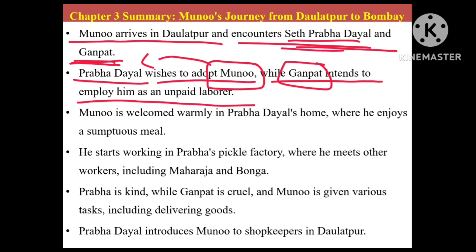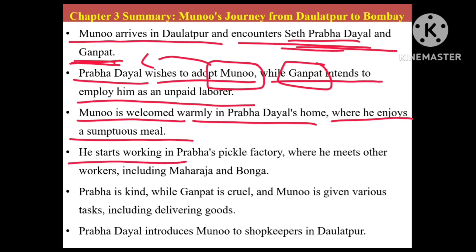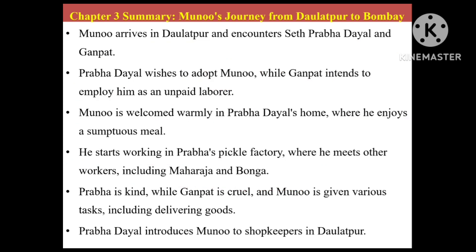Munnu is welcomed warmly in Prabhadayal's home where he enjoys a sumptuous meal — this was the need of the hour, as Munnu had escaped without money. He starts working in Prabhadayal's pickle factory where he meets other workers including Maharaja and Bonga. He was happy because he had a roof above his head, food in his stomach, and a person who was caring towards him. Prabha is very kind while Ganpat is cruel, and Munnu is given various tasks including delivering goods.